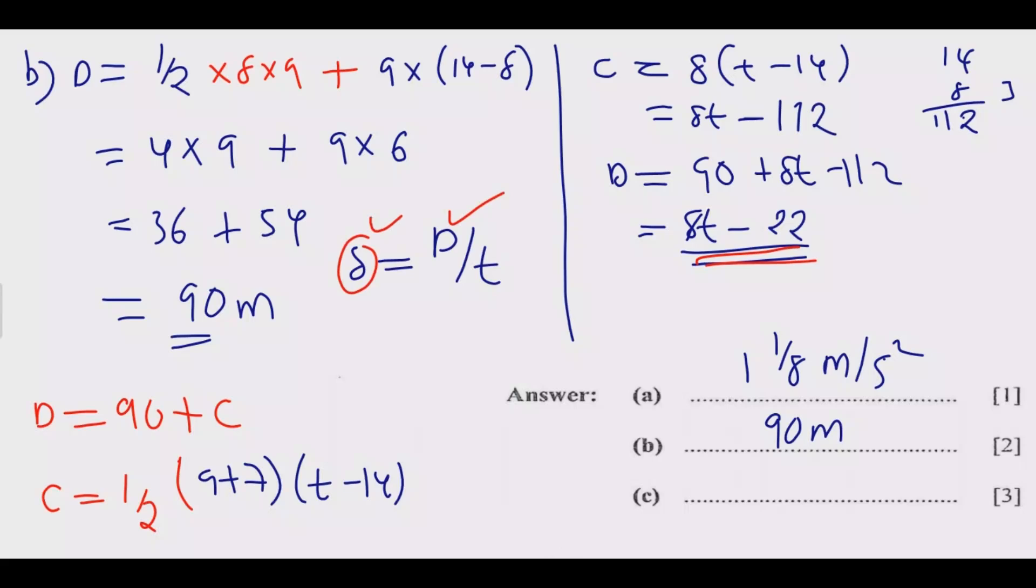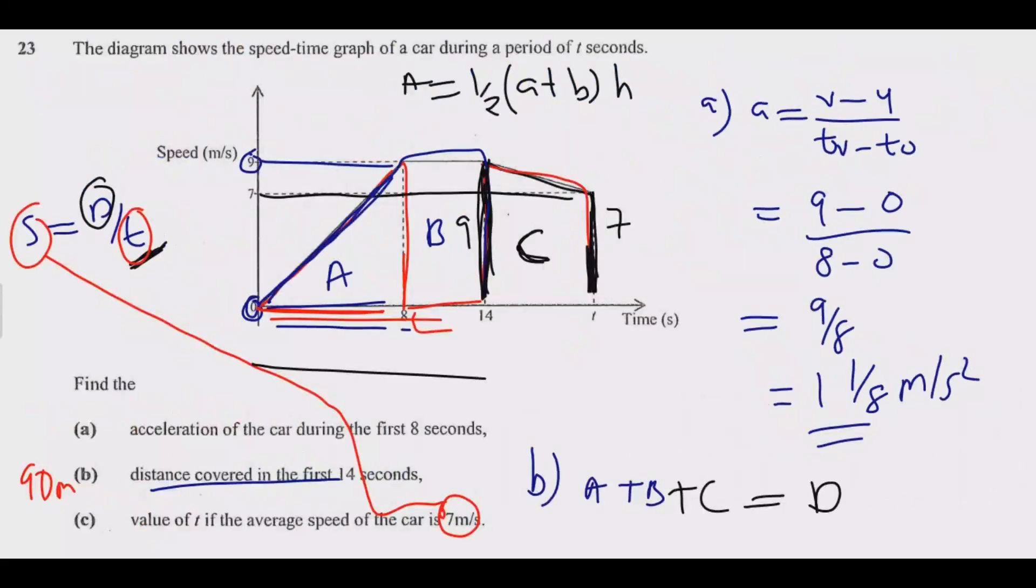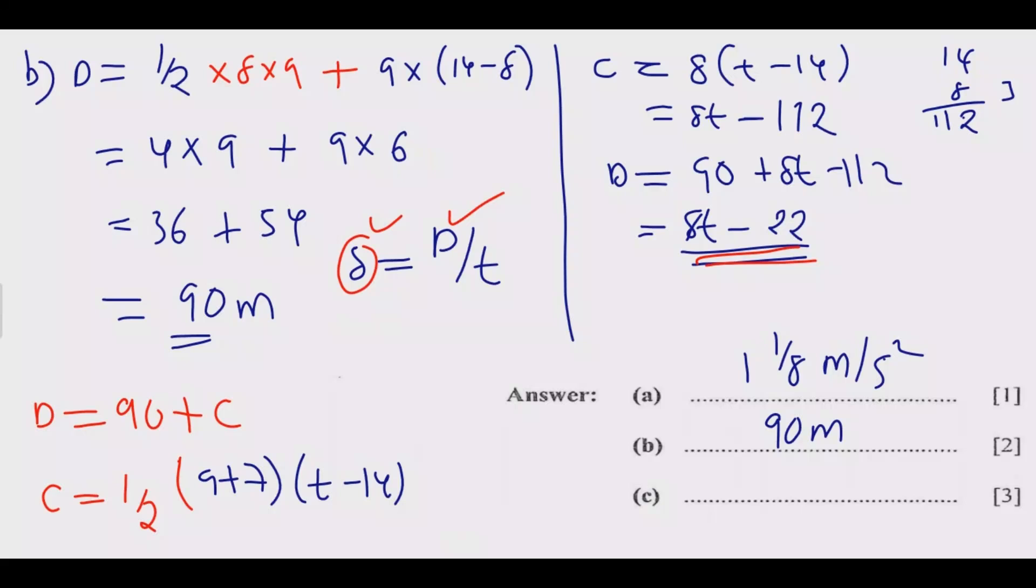So now let us solve for T. So like I said, this is 7 meters per second. So what we have is speed, which is 7 meters per second. Then we have D, which is equal to 8T minus 22. Then in this function, speed is equal to distance over time, we substitute. We're going to have 7 is equal to 8T minus 22 over T. Then we cross multiply to be 7T is equal to 8T minus 22.